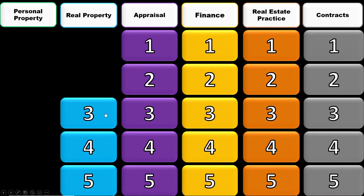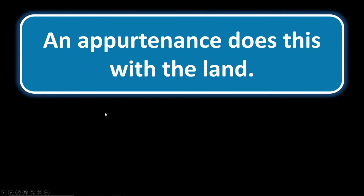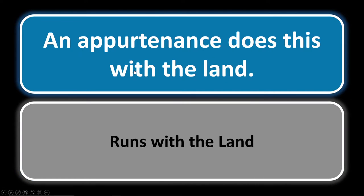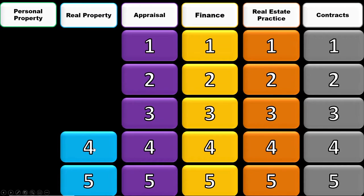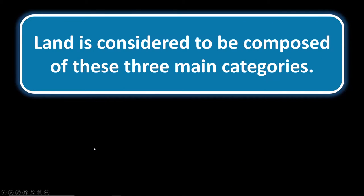Real property number three: what does an appurtenance do? An appurtenance runs with the land. For instance, an appurtenant easement runs with the land, CC&Rs run with the land, and a mutual water stock company runs with the land. Appurtenance runs with the land.